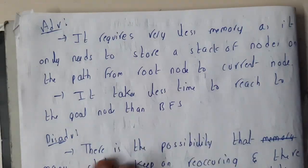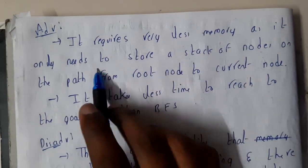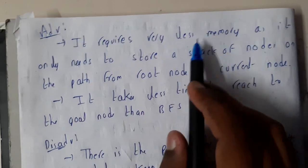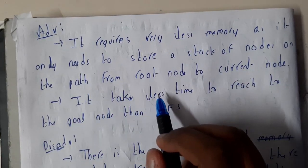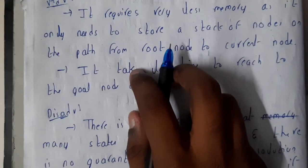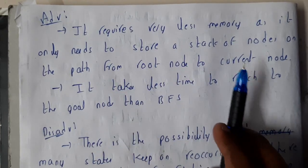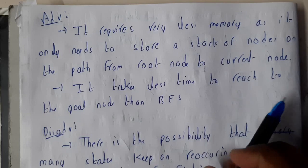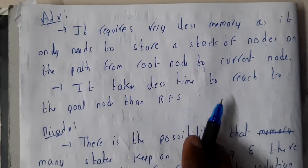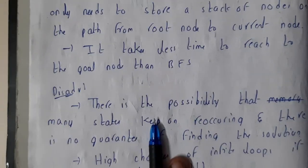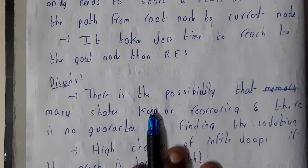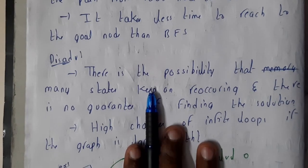What are the advantages and disadvantages? The advantage is that it requires less memory compared to BFS. It only needs to store a stack of nodes on the path from the root node to the current node. It takes less time to reach the goal node than Breadth First Search. It's better than BFS, but it's not so efficient.